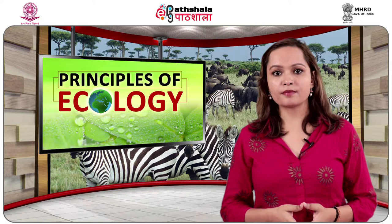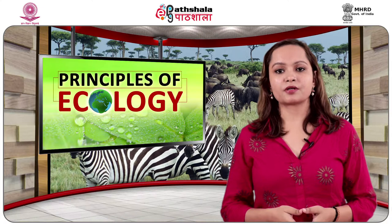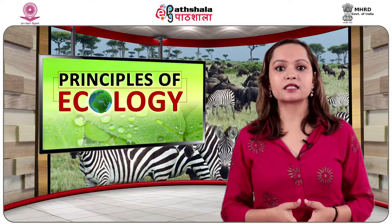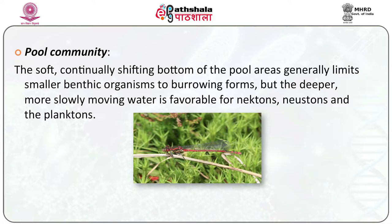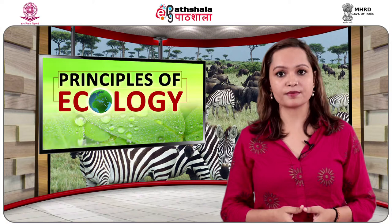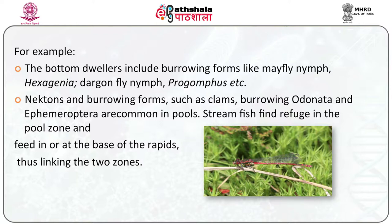The Pool Community: the bottom dwellers include burrowing forms like mayfly nymphs (Hexagenia), dragonfly nymphs, etc. The species composition of the pool zone consists of some organisms also present in ponds — for example, dytiscid beetles and gyrinids on the surface, as on the surface of the littoral zones of ponds, while bluegills (typical pond fishes) also reside in the deeper pools of streams. The soft, continually shifting bottom of the pool area generally limits smaller benthic organisms to burrowing forms. But the deeper, more slowly moving water is favorable for nektons, neustons and planktons. Sand or soft scale is the least favorable type of bottom and supports the smallest number of species and individuals of benthic forms. Clay bottom is generally more favorable than sand. Nektons and burrowing forms such as clams, burrowing odonates and ephemeropterans are common in pools.